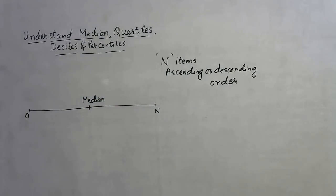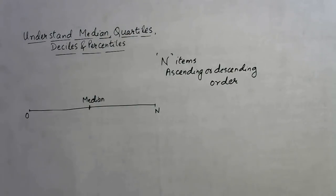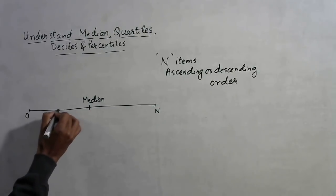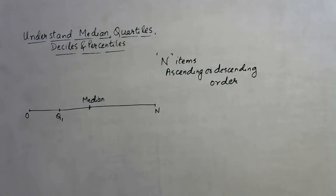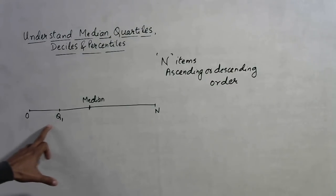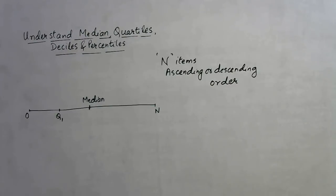If you want to relate the median with quartiles: the word 'quartile' comes from 'quarter,' and a quarter means 25%. So the first quartile Q1 is that value in the entire data below which 25% of values lie and above which 75% of values lie.